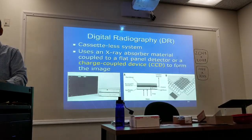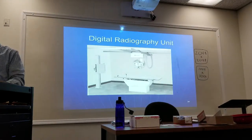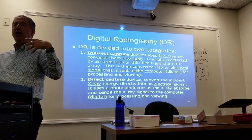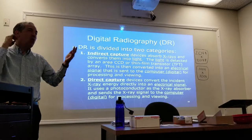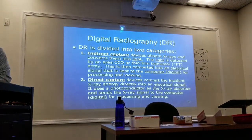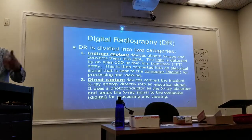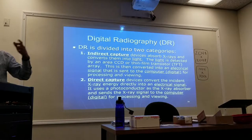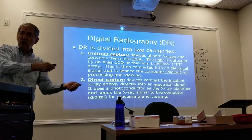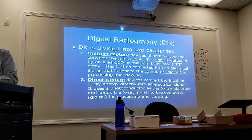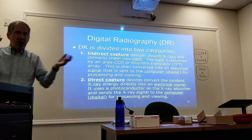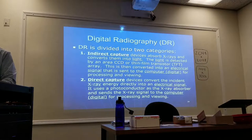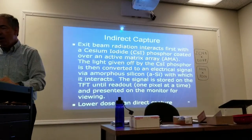DR is divided into two categories: indirect capture and direct capture. Indirect capture just adds one step more than direct. With indirect capture, it absorbs the x-rays after they go through the patient's body, converts that into light, and then the light is detected by the CCD or thin film transistor, and that's converted into an electrical signal — so it's x-ray to light to electrical signal.